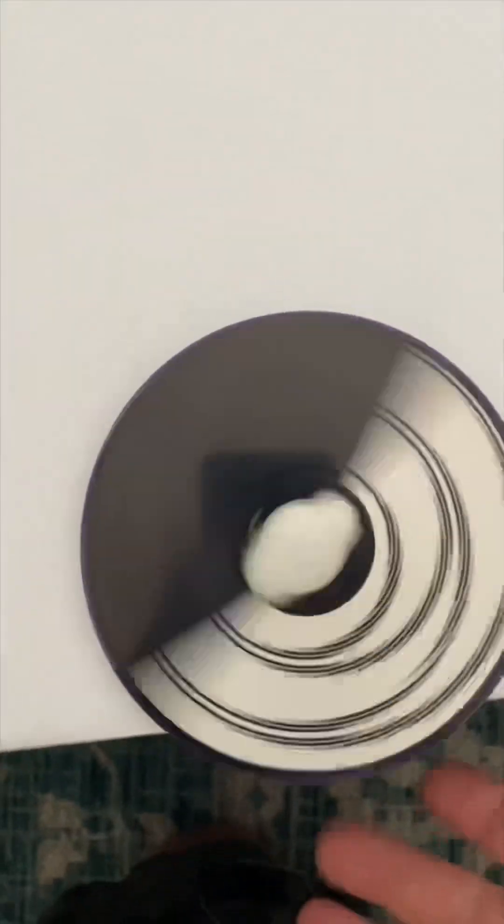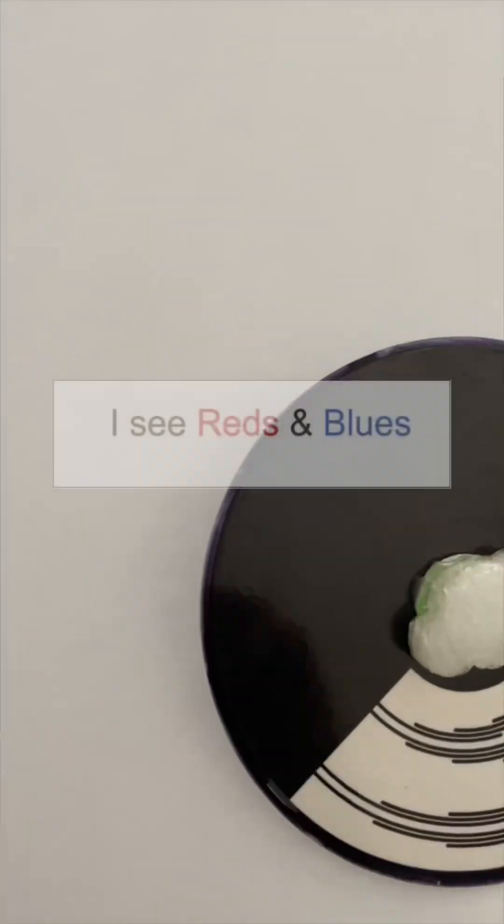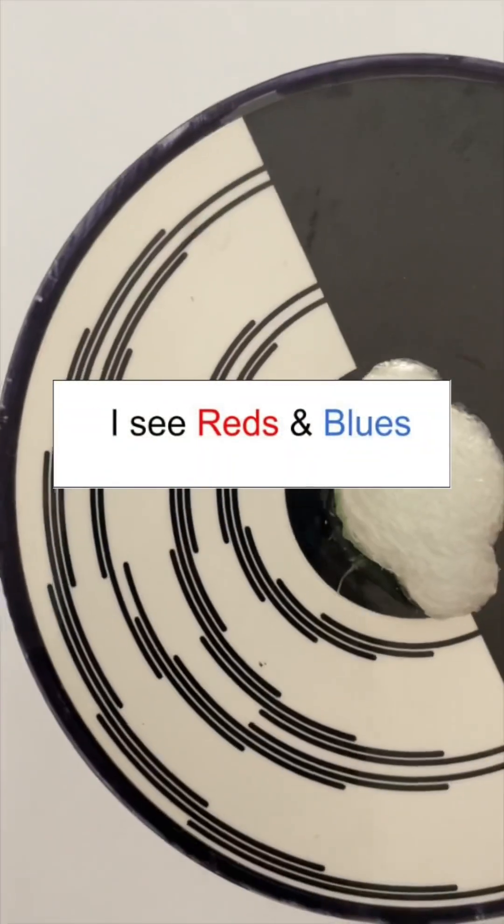Now everyone's going to see a little bit different on the colors, right? Because your rods and cones are going to interpret it something different. This is using a marble. Mine, I see reds and blues, but leave in the comment below what colors you see.